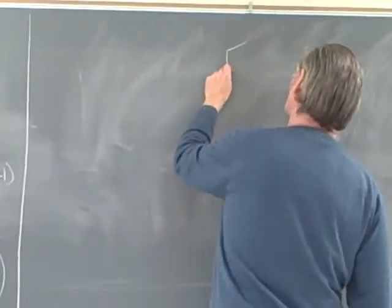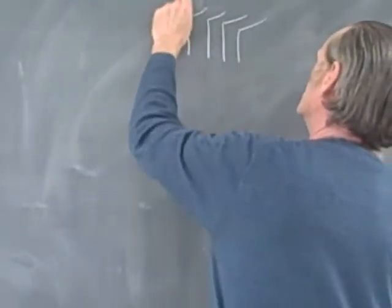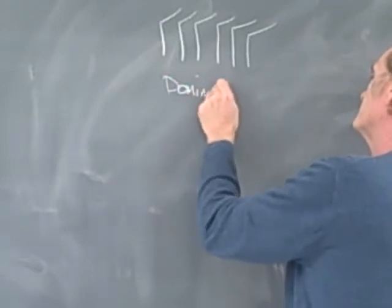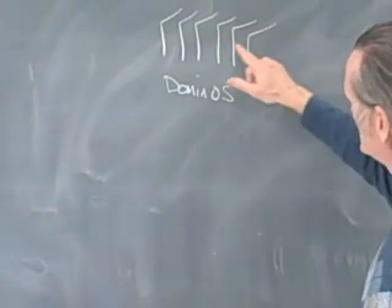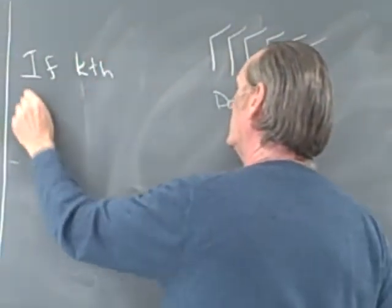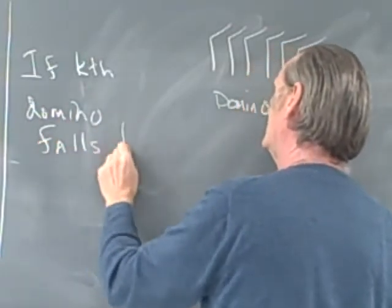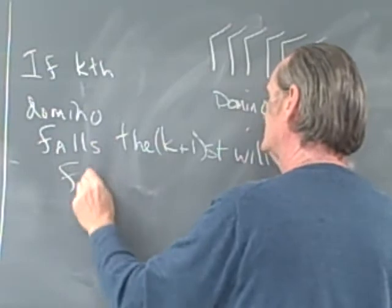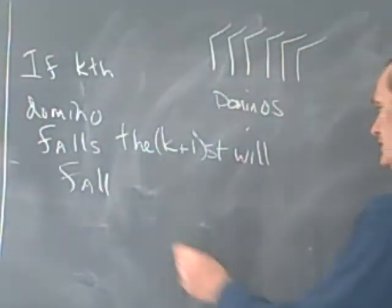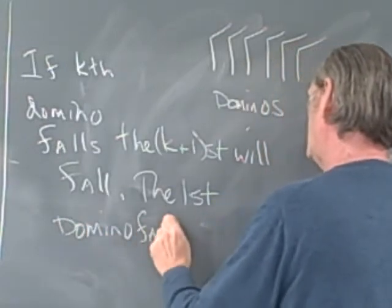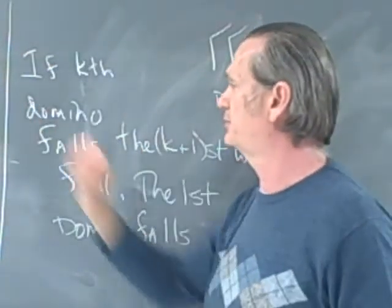The way we're going to prove these is by proof by induction. Think about the popular OK Go video where a truck pushes over a bunch of dominoes. What we know about dominoes is: if the kth domino falls, then the (k+1)th domino falls. But that's not enough to start the machine — you also have to have the first domino fall. Then all the dominoes will fall. We're going to use this domino idea to prove all these identities.